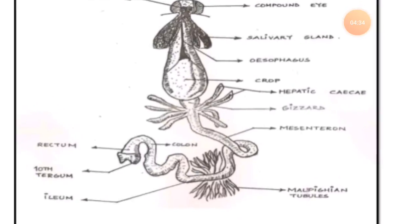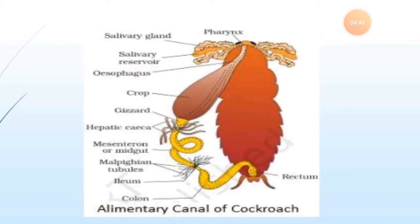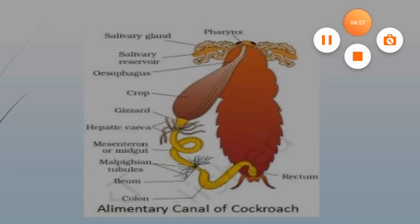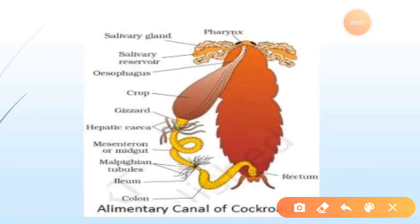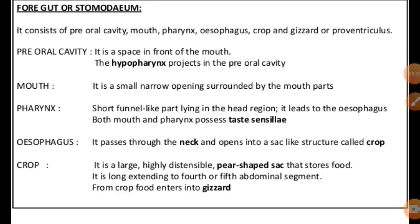You can see the structure of the alimentary canal here — from the mouth part to the rectum or anus. The whole alimentary canal sequences from start to end. It is divided into different categories: foregut, midgut, and hindgut, each playing different roles.